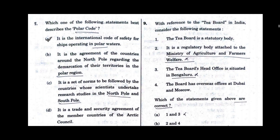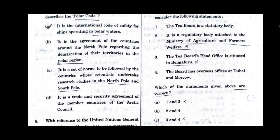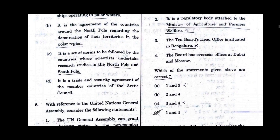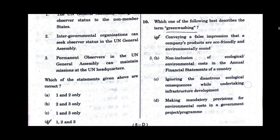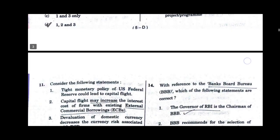Question number 9. With reference to the T-World in India, consider the following statements. Option D will be the correct answer for question number 9: 1 and 4. Question number 10. Which one of the following best describes the term greenwashing? Option A will be the correct answer: conveying a false impression that a company's products are eco-friendly and environmentally sound.